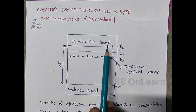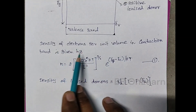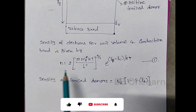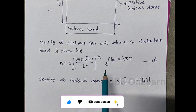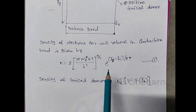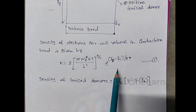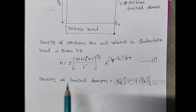The number of electrons in the conduction band — that is, the density of electrons per unit volume in the conduction band — was already derived. That equation is for an intrinsic semiconductor. We derived this equation for the electron concentration in the conduction band. You can see that video, which is linked in the description and also in the card on this video.